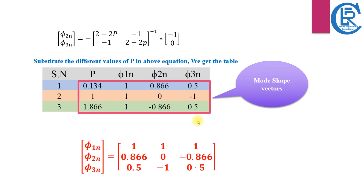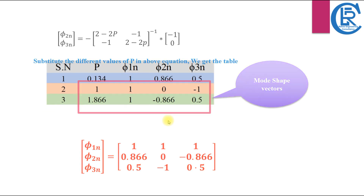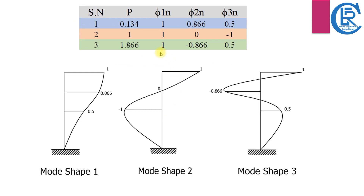For three different values of p we get three different mode shape vectors. Since φ₁ at the top story is set to 1, we obtain the remaining components φ₂ and φ₃ for each mode. For p = 0.134 we get the first mode shape vector, for p = 1 the second, and for p = 1.866 the third. Now we will plot the calculated mode shape values — since we assumed unit deflection at the top story, φ₁ equals 1 at every mode shape.